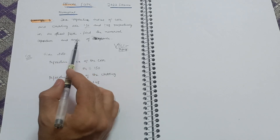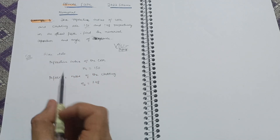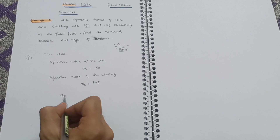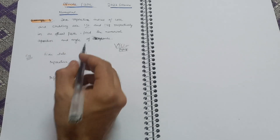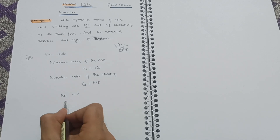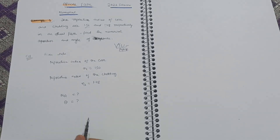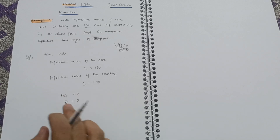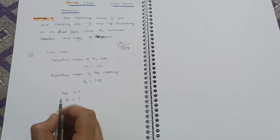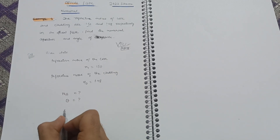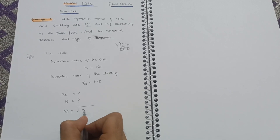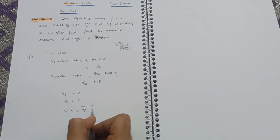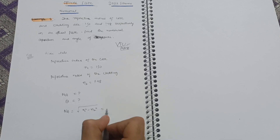We have to calculate two things in this question: one is the numerical aperture (NA), and the other is the angle of acceptance, denoted by theta. You need to remember two formulas for these terms. Numerical aperture is equal to the square root of n1 squared minus n2 squared.